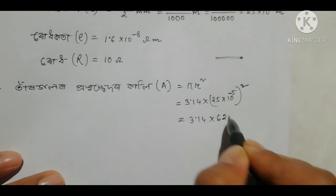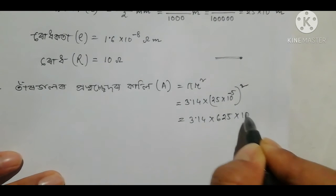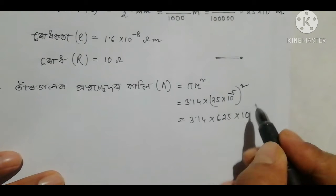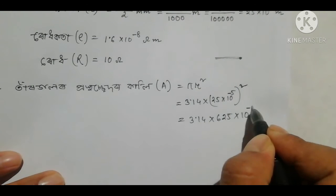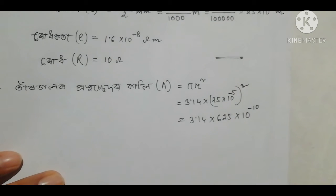25 squared is 625, and 10 to the power minus 5 into 2, so minus 10.